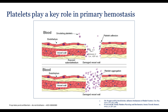Platelets play a key role in primary hemostasis. The initial stage is platelet adhesion, where platelets contact the negatively charged surfaces of exposed endothelium of damaged tissue. This process is mediated through interaction between platelet surface glycoproteins — particularly GP1B — von Willebrand's factor, and collagen fibers of the subendothelium. Once platelets adhere to the collagen, they undergo morphological and biochemical changes constituting a secondary phase known as platelet activation.